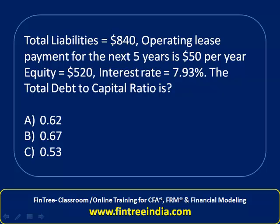Total liability is 840 as of now, and we've been given the amount of equity which is 520. The operating lease value is given as 5 years, payment of 50, and 7.93% interest. For the purpose of calculation of the debt-to-capital ratio, the present value of all operating lease payments should be considered as part of liability.